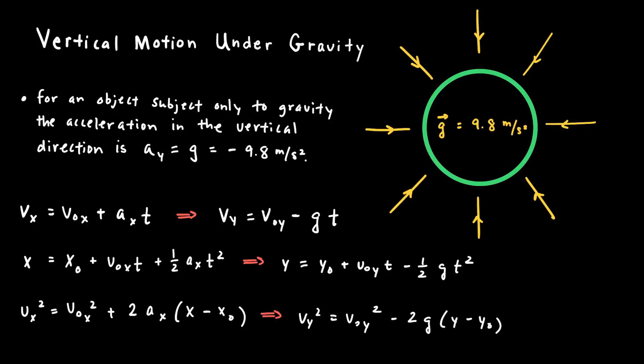In this video, I'd like to discuss objects that are moving under the influence of gravity. If I drop an object near the surface of the Earth, we know that that object will travel towards the surface of the Earth. And that is because everywhere around Earth, there exists a gravitational field.